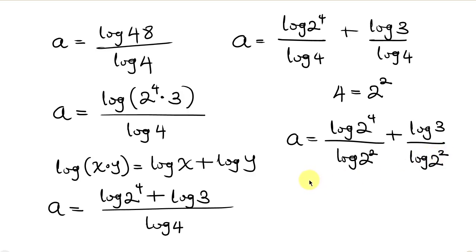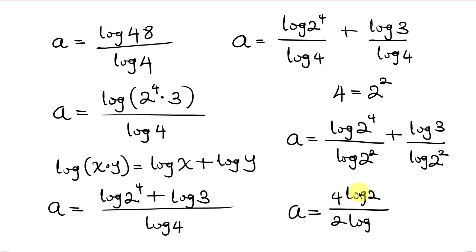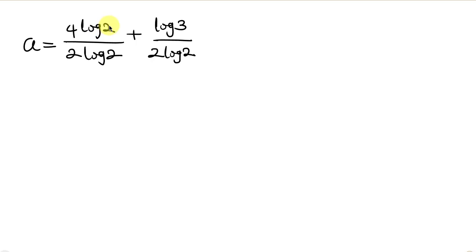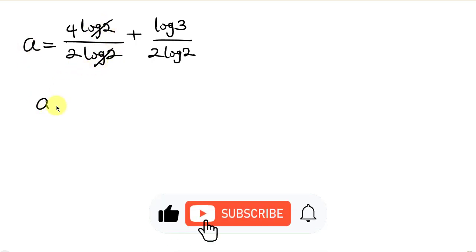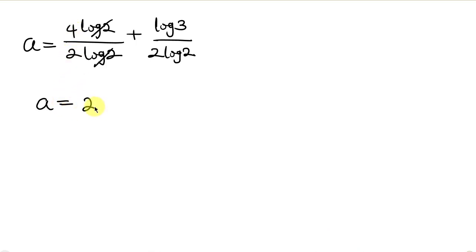Now our next step will be to apply the power law of logarithm. So this becomes a equal to 4 log 2 all over 2 log 2, plus log 3 all over 2 log 2. Notice that log 2 cancels out log 2, so we have a equal to 4 divided by 2, which is 2, plus — now there is an invisible 1 here — so this means 1 over 2, times log 3 over log 2.